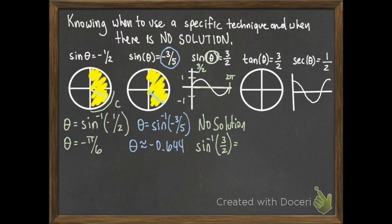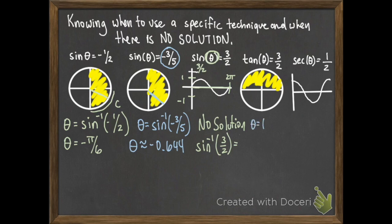The next one has to do with tangent. We use arc tangent to find angles from the available range. The question is: what angle, when you take the tangent of it, gives 3/2? That's not a known value. The known tangent values are 0, √3, 1, √3/3, or undefined. So we use the inverse tangent on a calculator, and it gives approximately 0.983 radians.